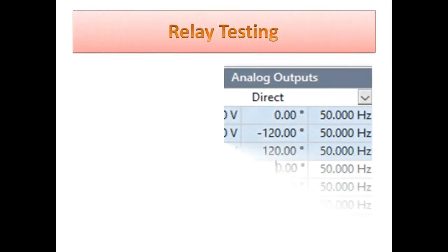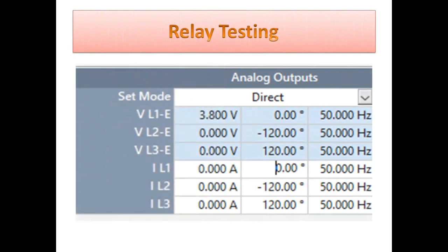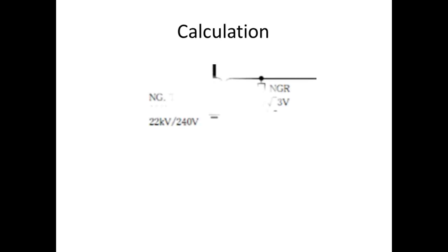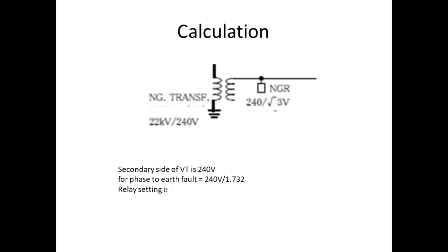Now we will see how to test this 95% earth fault protection. Before going to testing, we have to see the NGT VT ratio. If you see it, it has 22 kV over 240 volts.